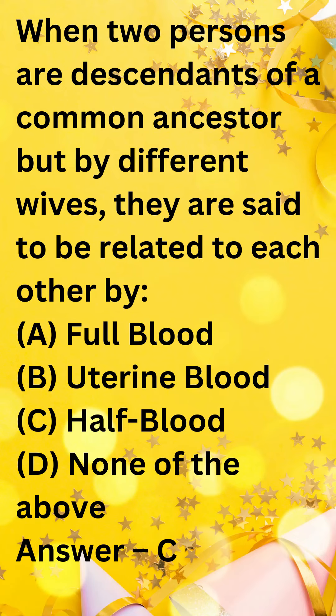When two persons are descendants of a common ancestor but by different wives, they are said to be related to each other by: A. Full blood, B. Uterine blood, C. Half blood, D. None of the above.